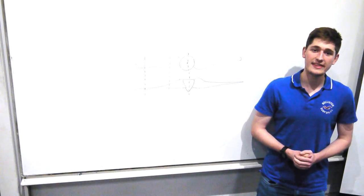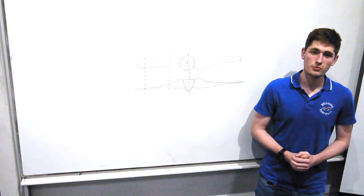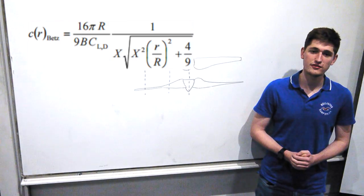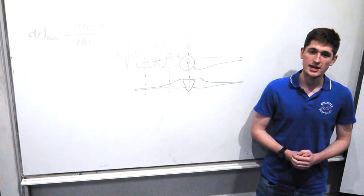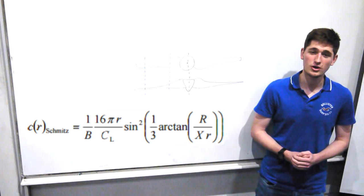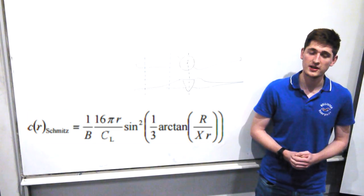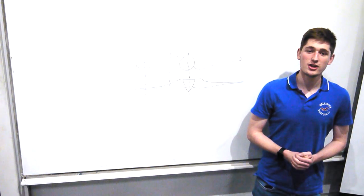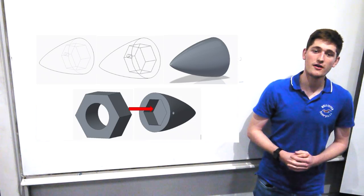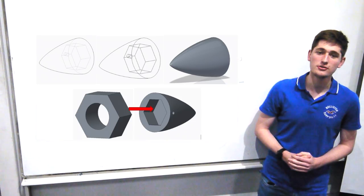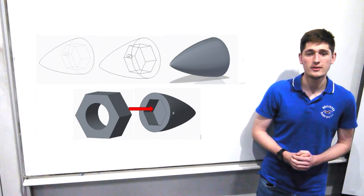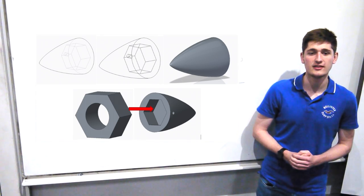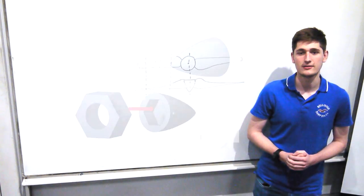In order to consider the aerodynamic forces acting on the blade, we had to first think about two major theories for the chord distribution: Betz and Schmitz. It was found that Schmitz theory better modelled the optimal chord length at the root, allowing us to blend the blade onto the spinner cone. The chosen spinner cone design was the Von Karman shape, part of the Haack series of nosecones, which has the minimum coefficient of drag for a given length-to-diameter ratio, meaning that airflow downstream is affected the least, improving the efficiency of the blade.